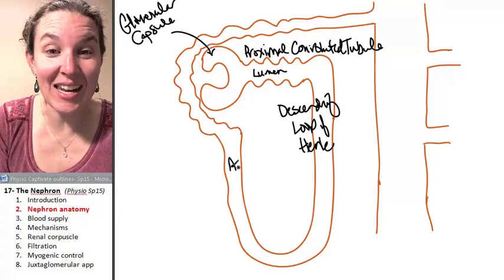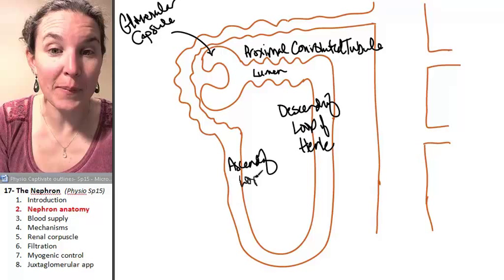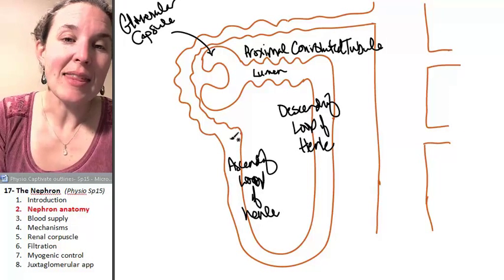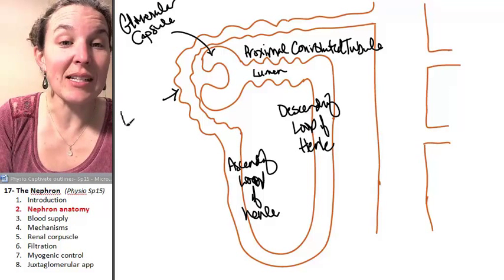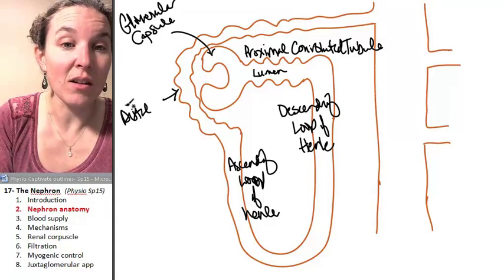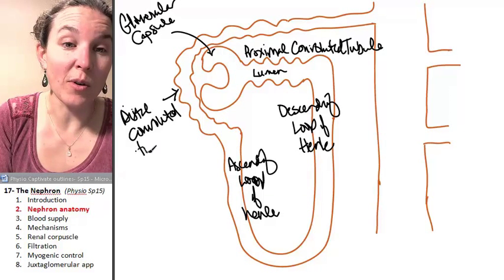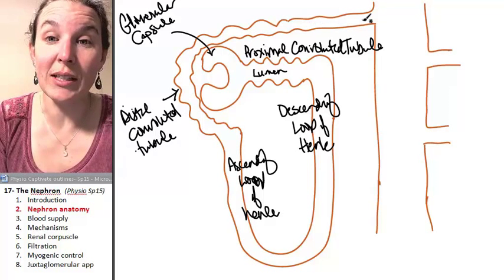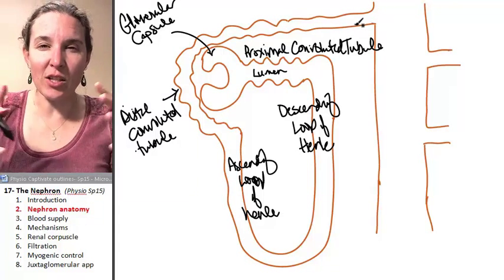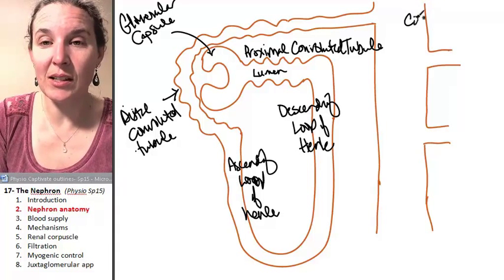And then guess what this one's called? This is the ascending loop of Henle. The ascending loop of Henle flows into the distal convoluted tubule. My distal convoluted tubule looks really long, but that's just so I could spread out my final structure, which is the collecting duct.